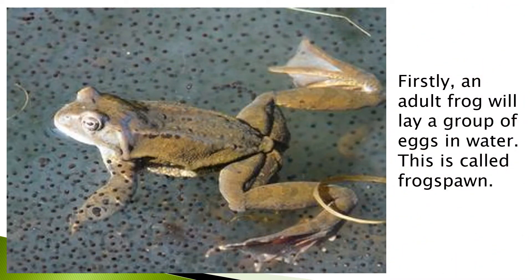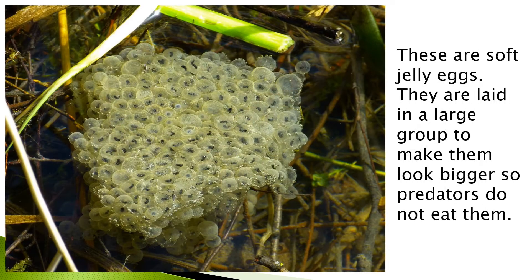Firstly, an adult frog will lay a group of eggs in the water. This is called frog spawn. These are soft jelly eggs. They are laid in large groups to make them look bigger so predators do not eat them.